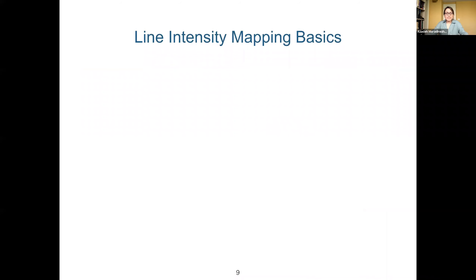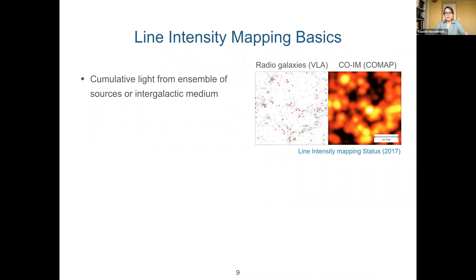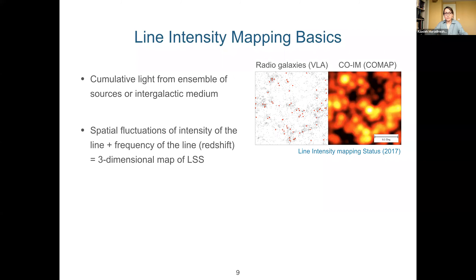Let me cover some basics of the intensity mapping technique. In contrast to galaxy surveys, which measure the shape and clustering of individual sources, intensity mapping maps large-scale structure by measuring the cumulative light from an ensemble of sources or the intergalactic medium. The spatial fluctuations of the line intensity, together with the frequency of the line, provide a three-dimensional map of the LSS. The plot on the right shows a simulated two-degree square patch of the sky as observed in radio galaxies with a survey like DLA versus intensity mapping of CO rotational lines with a survey like COMAP. While the galaxy survey maps only 10% of sources in that sky patch, intensity mapping gets light from all sources and provides a low-resolution map of the large-scale structure.